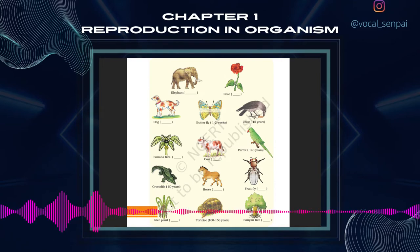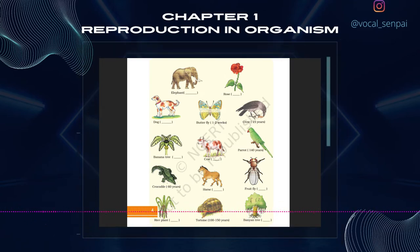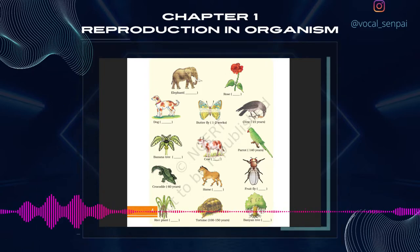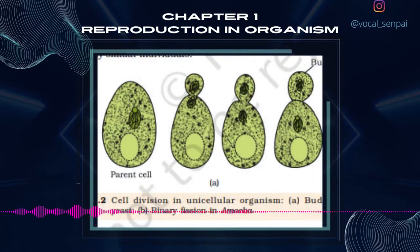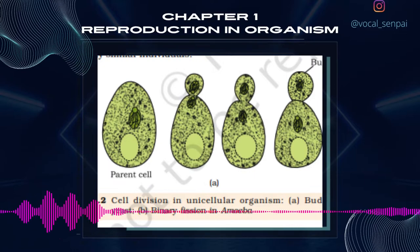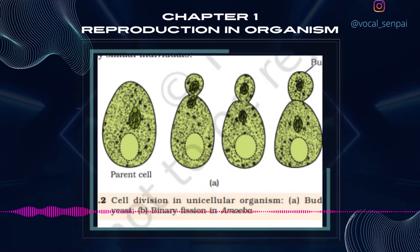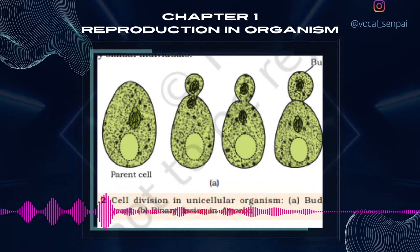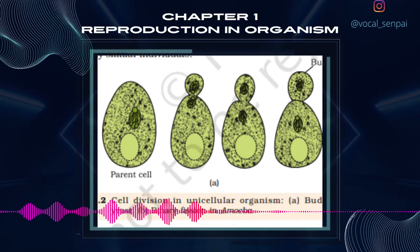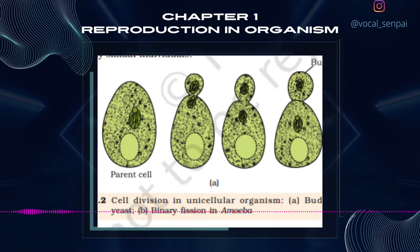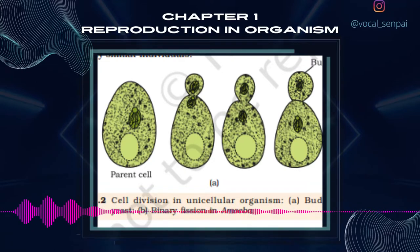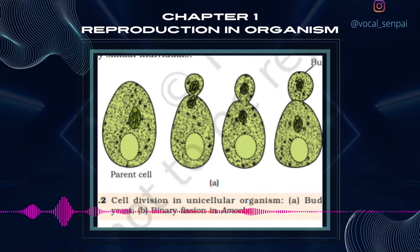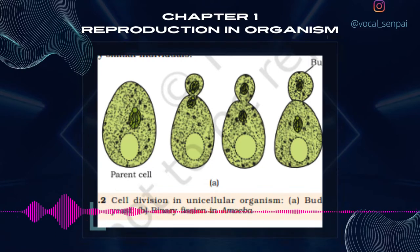Have you ever wondered how vast numbers of plant and animal species have existed on earth for several thousands of years? There must be some processes in living organisms that ensure this continuity. Yes, we are talking about reproduction, something that we take for granted. Reproduction is defined as a biological process in which an organism gives rise to young ones, offspring, similar to itself. The offspring grow, mature and in turn produce new offspring. Thus, there is a cycle of birth, growth and death. Reproduction enables the continuity of the species, generation after generation.